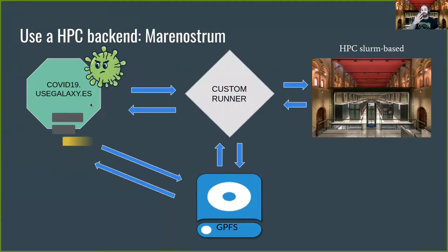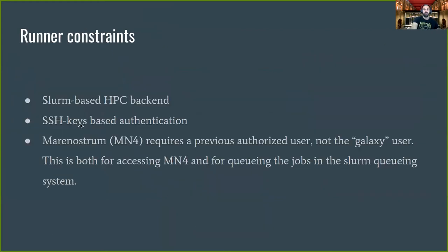Unlike other runners available at the Galaxy project, this custom runner makes it possible for the backend to have a different file system, since it synchronizes back and forth all inputs, outputs, and dependencies for the issued jobs. Of course, the runner comes with some constraints.